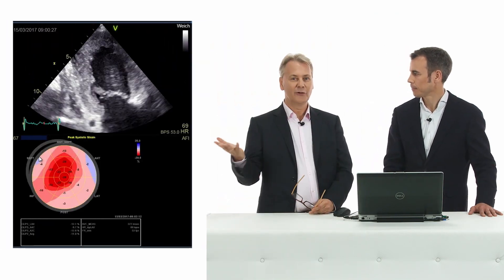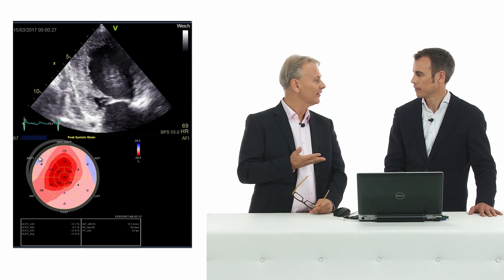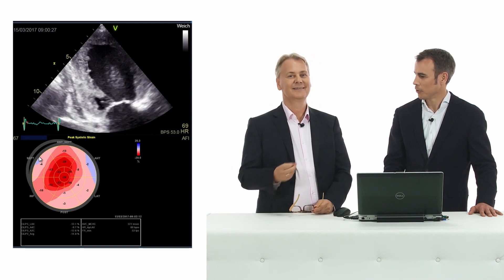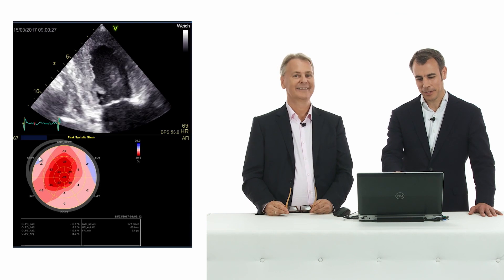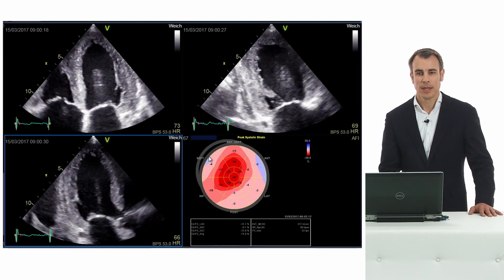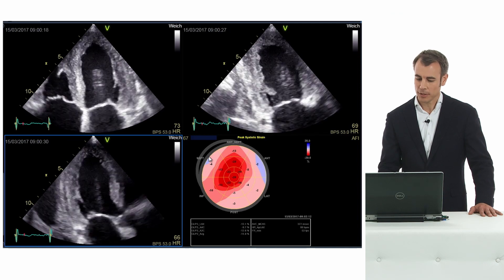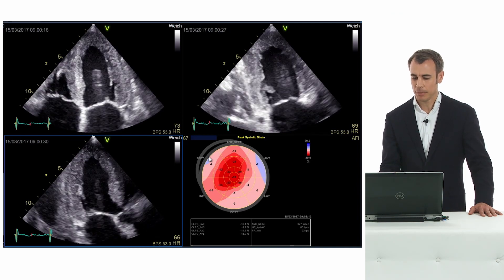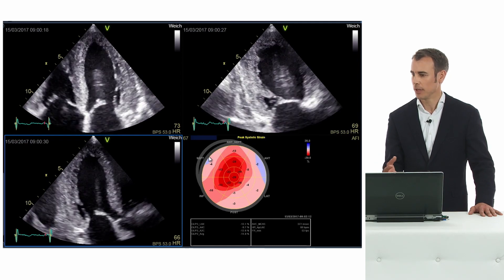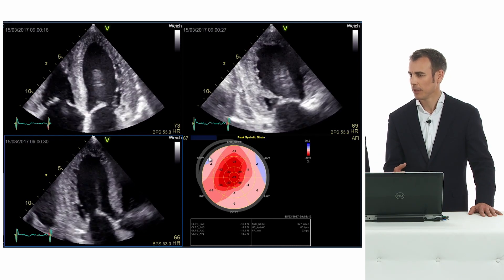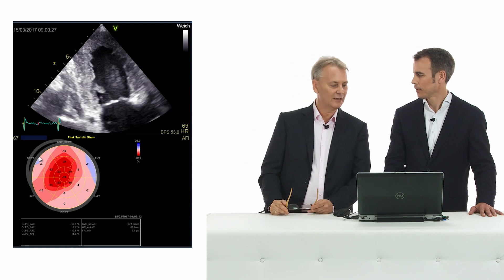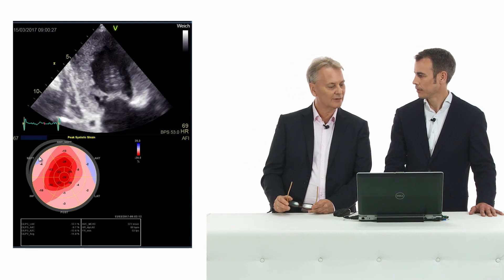The bullseye has a typical configuration and we call this apical sparing. I just recently heard a very interesting name — have you ever heard the name 'cherry on the cake'? It clearly tells us that it looks like a cherry on the cake. We have a gradient between the apical segments and the basal segments, meaning preserved function in the apical segments and very poor function in the basal segments. You can actually appreciate that even on the 2D image.